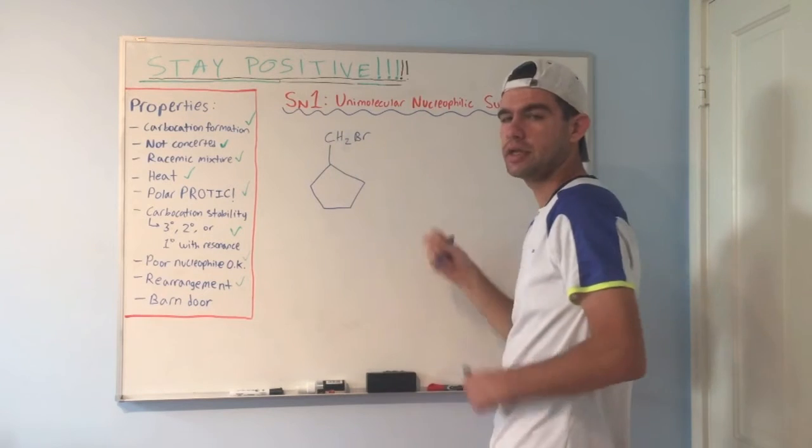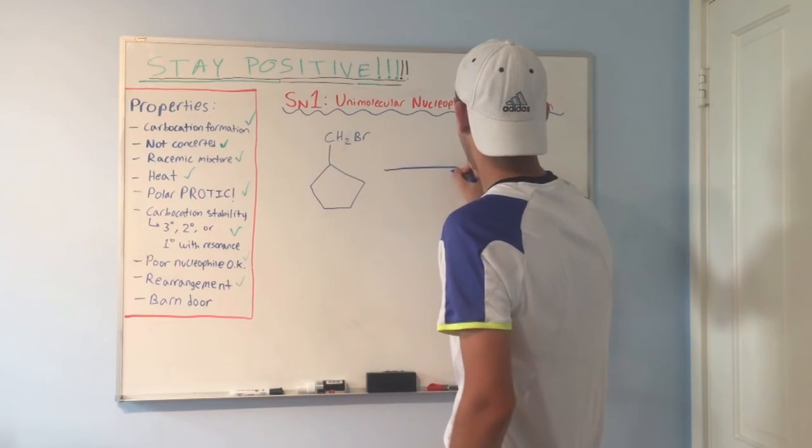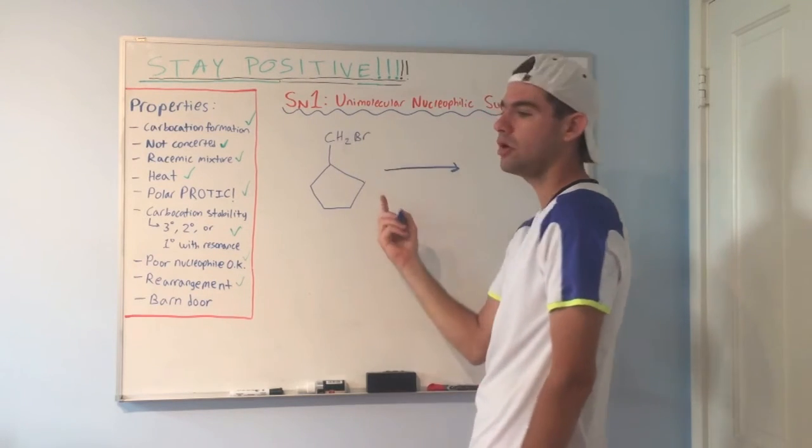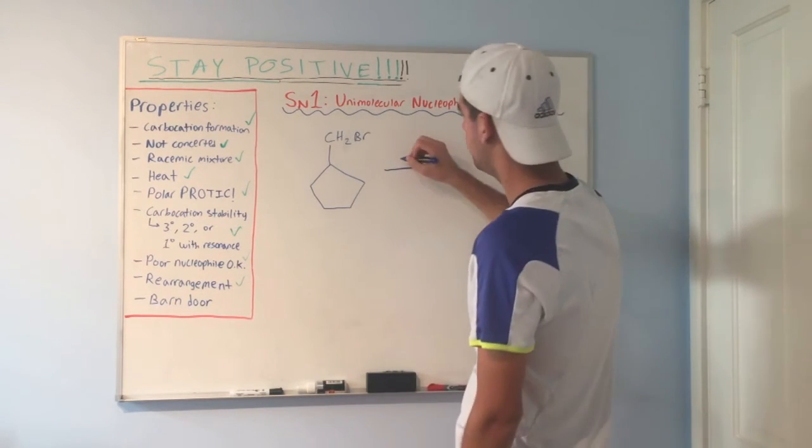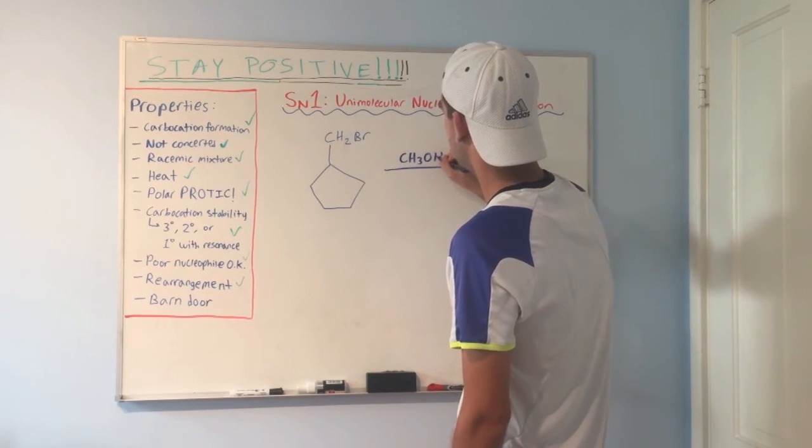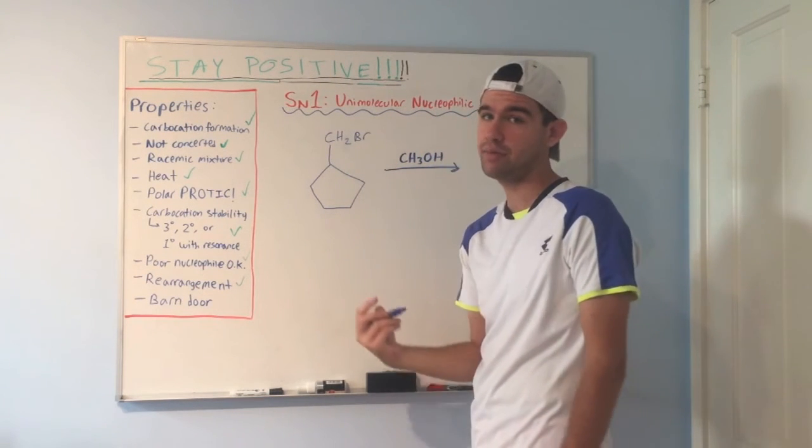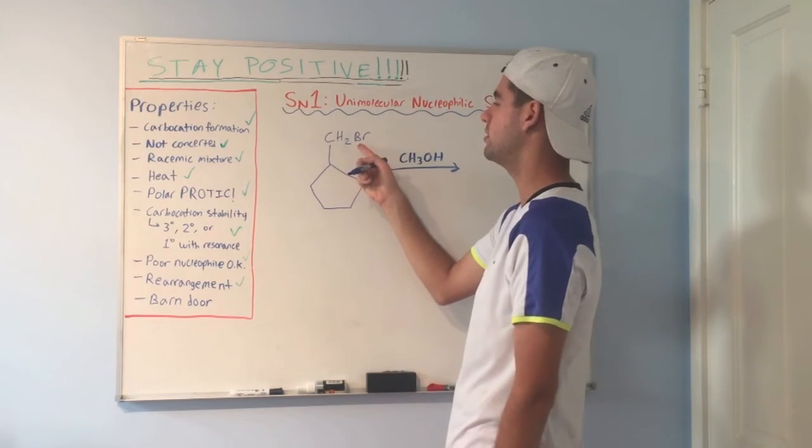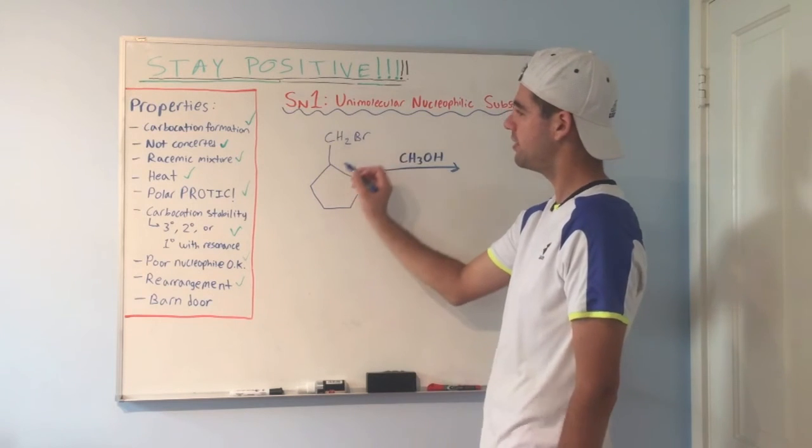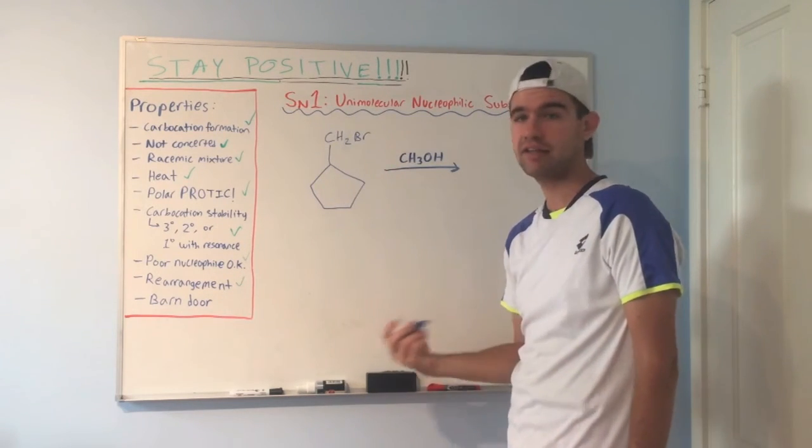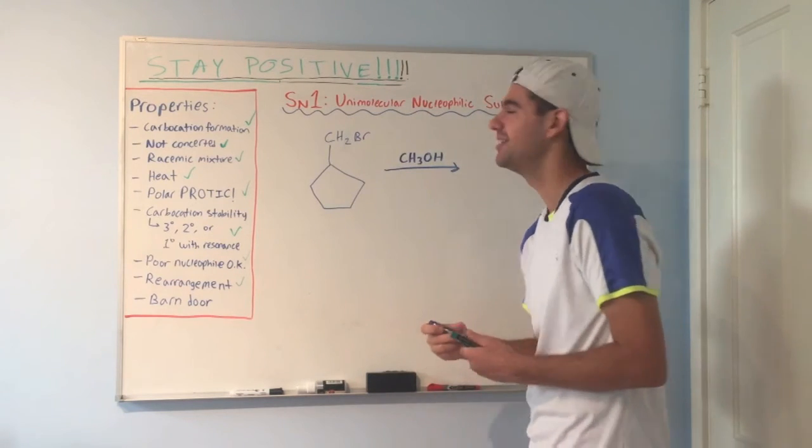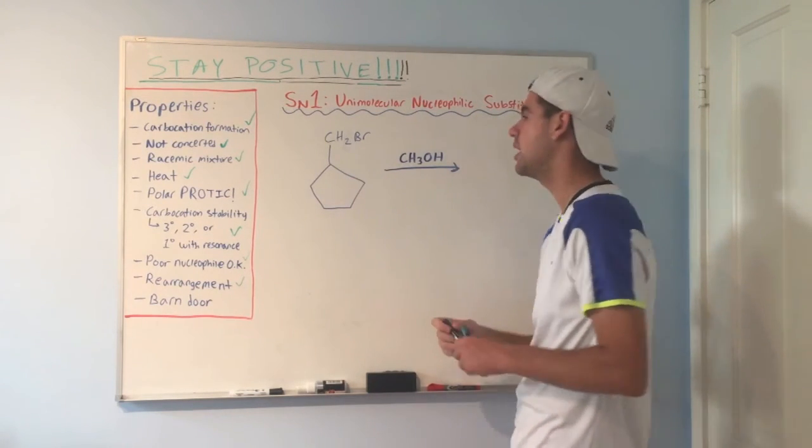First things first. Can SN1 happen if we just kick off this bromine? Just straight up kick off the bromine and don't do anything else? The answer is no. Because that would give us a primary carbocation, and you cannot have primary carbocations. They're way too unstable. So we need to rearrange somehow. We could bring this hydrogen up and then have a tertiary carbocation. That's definitely an option. That would be the best option. But I chose this example because there's another option as well.